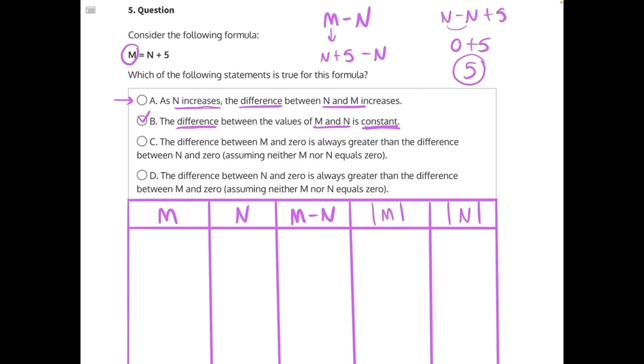We can start with just 1, 2, and 3. If we were to plug in 1 for N, we'd have M equals 1 plus 5. If we were to plug in 2, we would have M equals 2 plus 5. And then if we were to plug in 3, we would have M equals 3 plus 5.